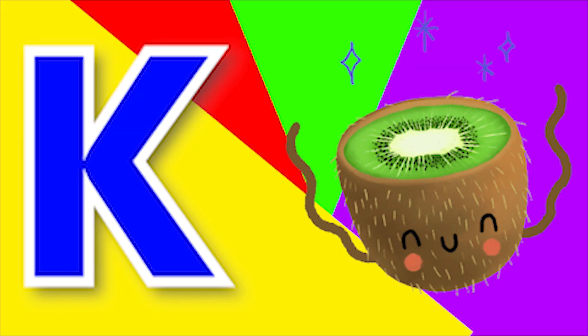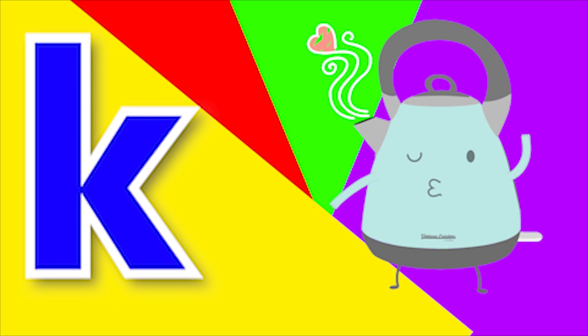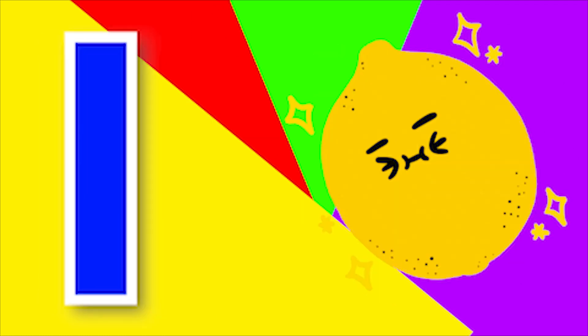K for Kite, K for Cattle. L for Leg, L for Lemon.